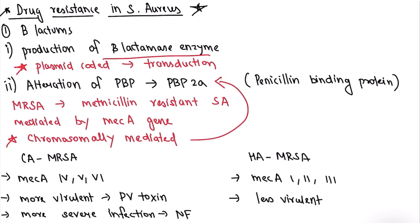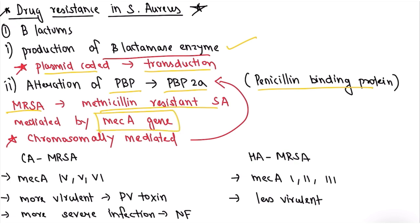Regarding drug resistance in Staph. aureus: resistance to beta-lactam antibiotics occurs by two mechanisms. First, production of beta-lactamase enzyme, which is plasmid-coded and can be transferred to other bacteria by transduction. Second, alteration of PBP to PBP2a — this alteration is chromosomally mediated by the mecA gene, and leads to MRSA.